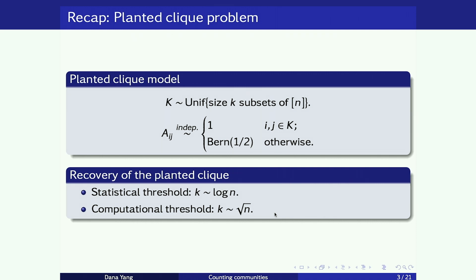The degree counting algorithm looks at the degrees of all vertices and arranges them by magnitude. Near the computational threshold this gives only a constant fraction of clique vertices, but for clique recovery problems you can do a simple cleanup step: once you find a constant fraction of members, look at everything connected to all those vertices you know are in the clique. With partial recovery, a simple cleanup achieves exact recovery.